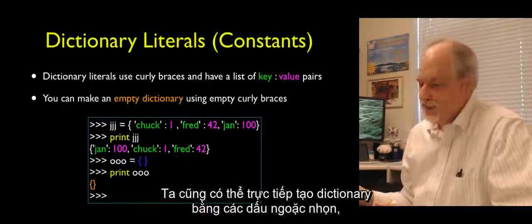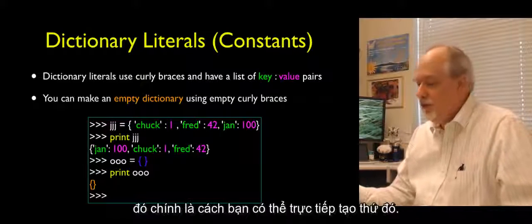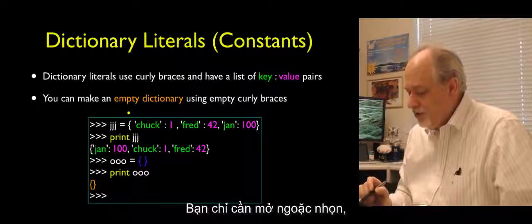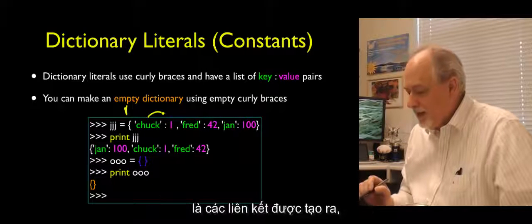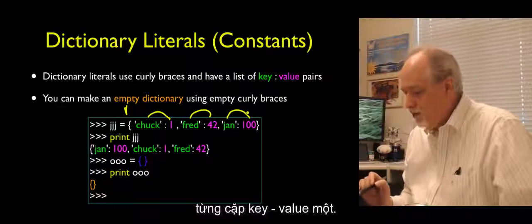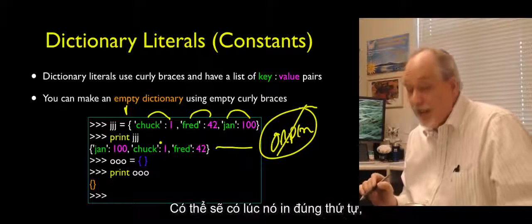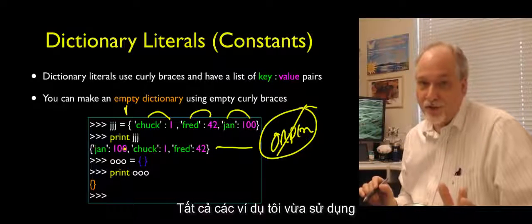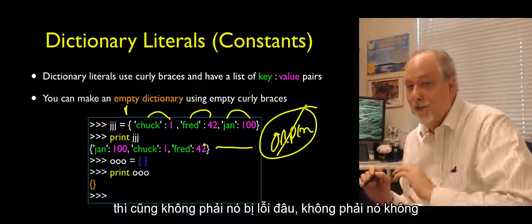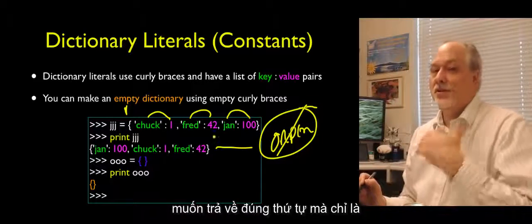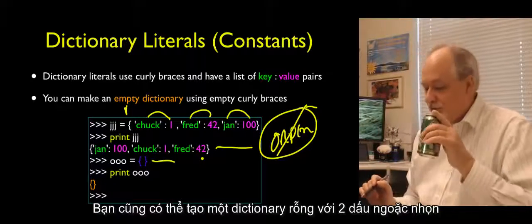We can make dictionary literals using curly braces. They look just like what you get when you print a dictionary out — that's one nice thing about Python. You open with a curly brace and say 'Chuck': 1, 'Fred': 42, 'Jan': 100 — making key-value pair connections. When we print it out, the order is not maintained. They don't maintain order. You can also create an empty dictionary with just empty curly braces.